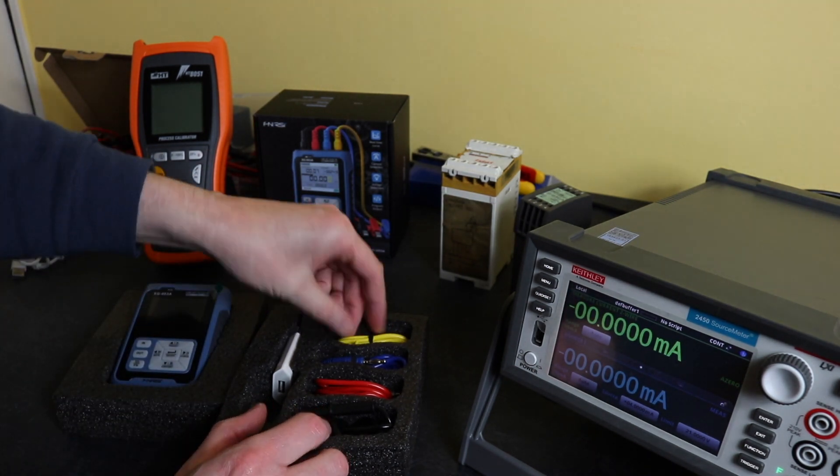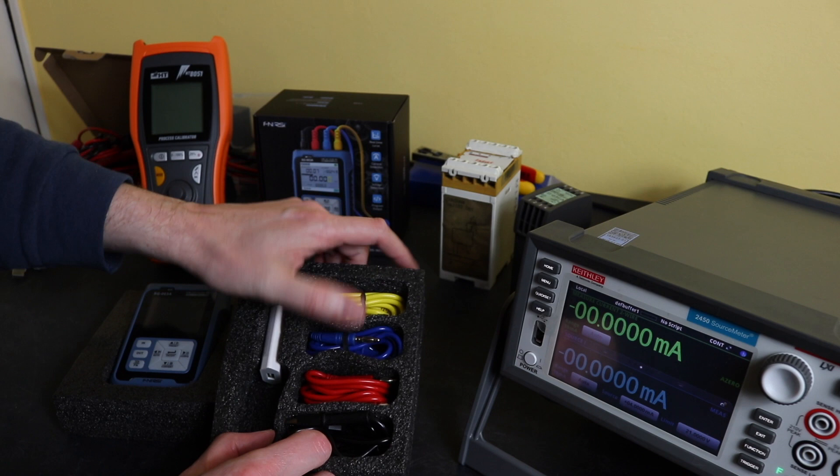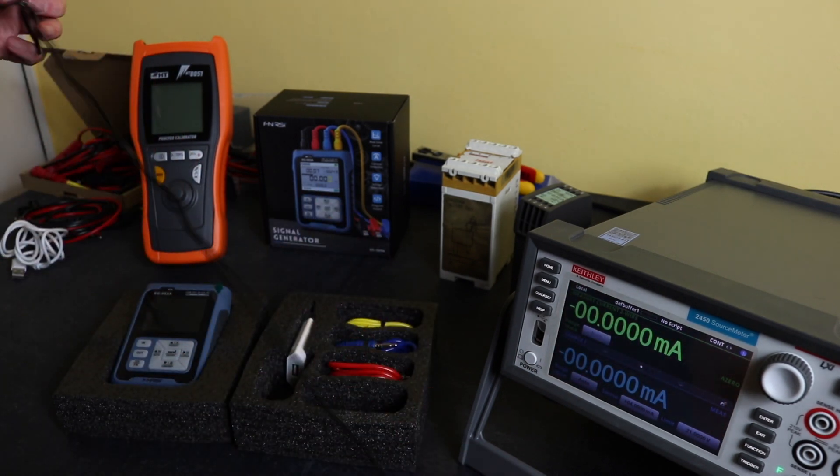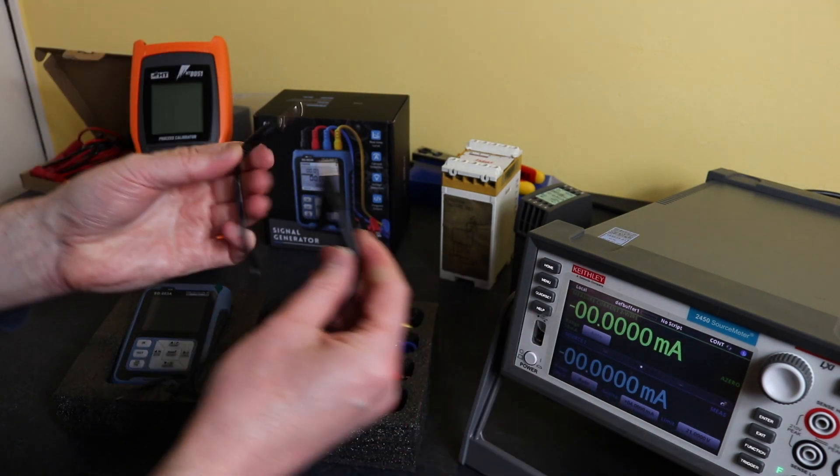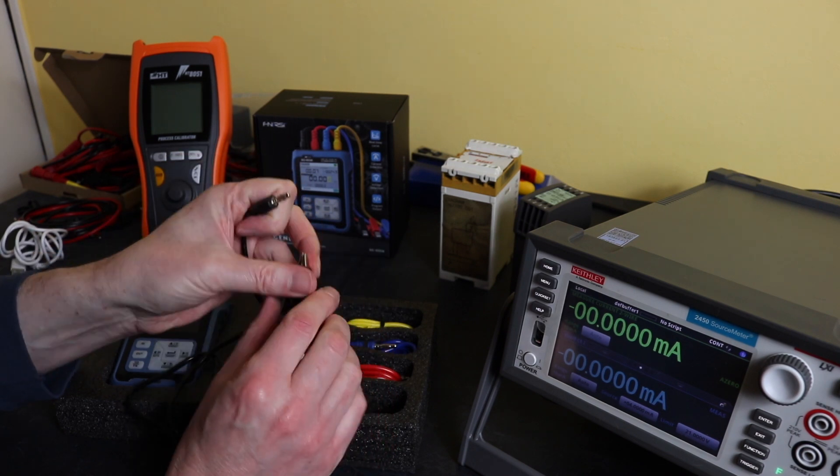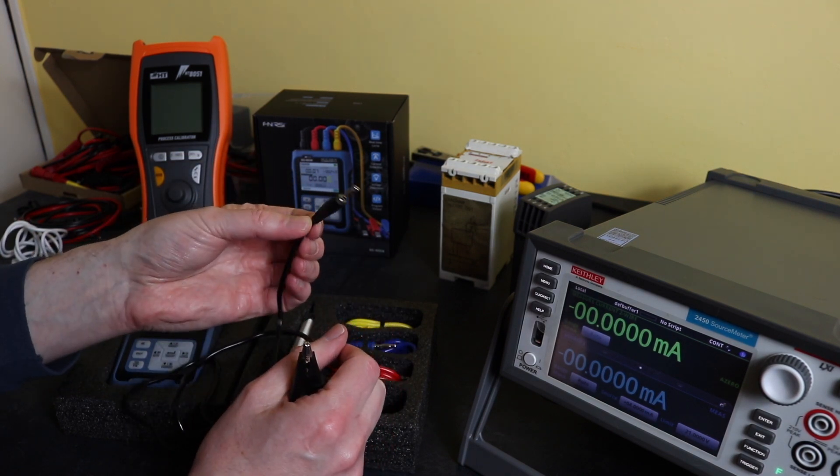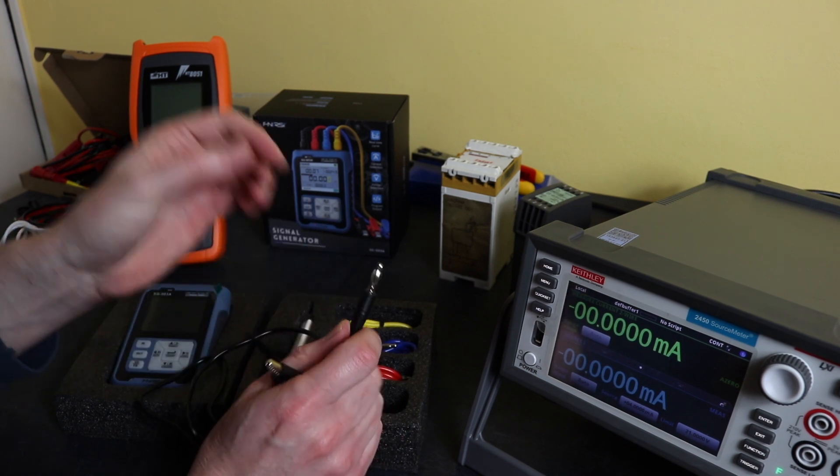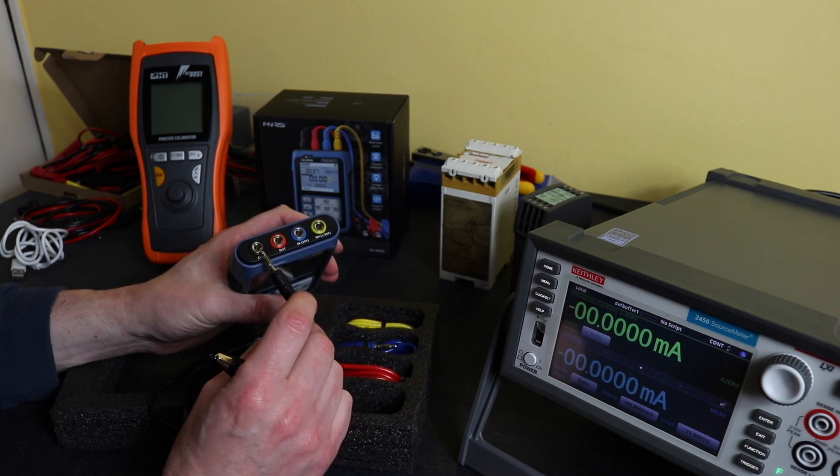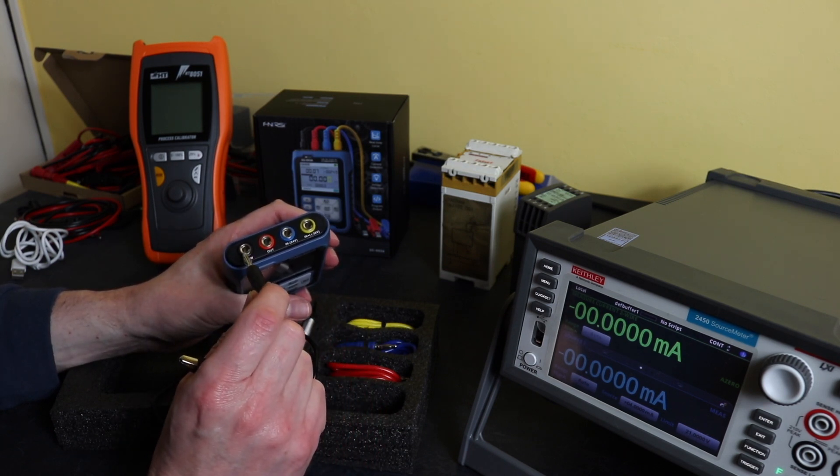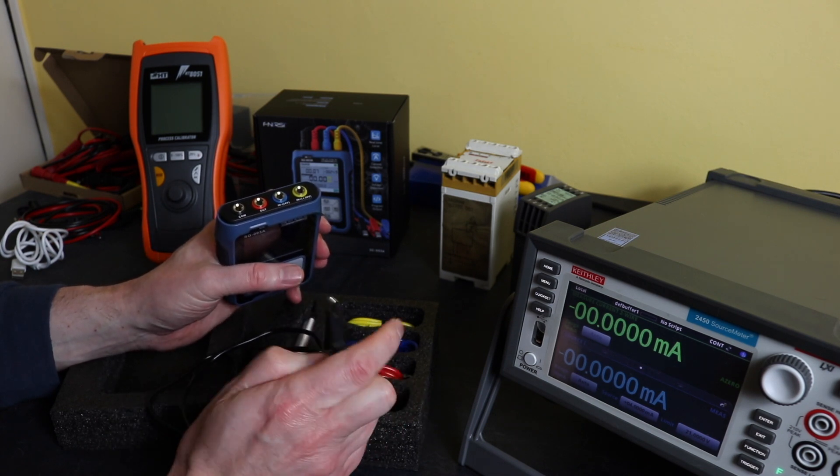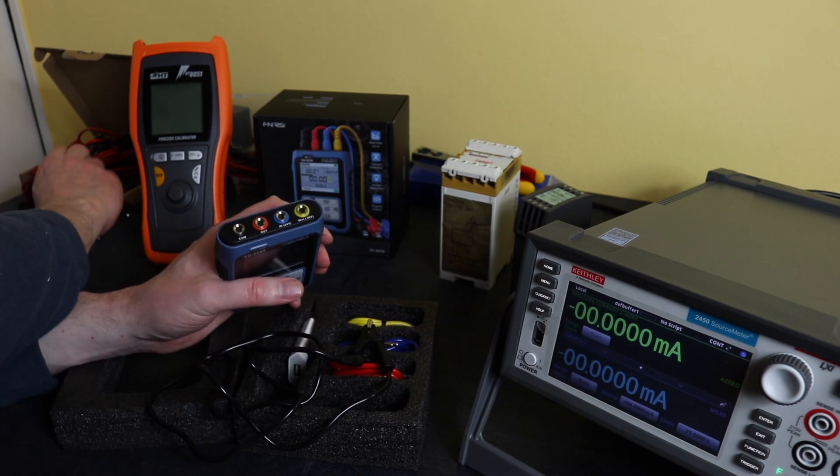Then leads, you get four leads with it: yellow, blue, red, and black. These are about a meter long, crocodile clip hardwired onto the end and four millimeter plug at the other end. You'll notice it hasn't got the safety shroud on this that you see a lot of instrumentation nowadays. The plugs on these are not safety shroud compatible.